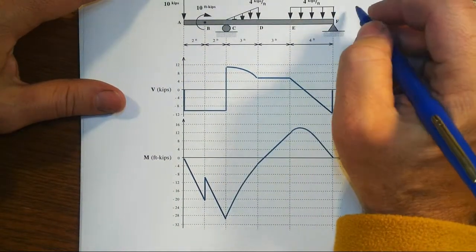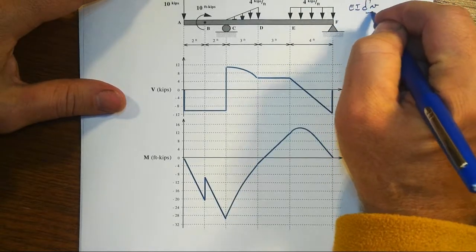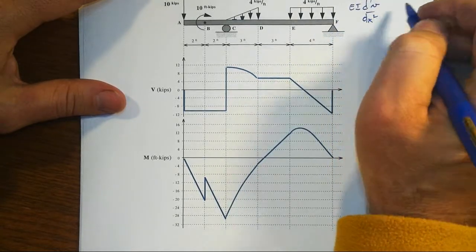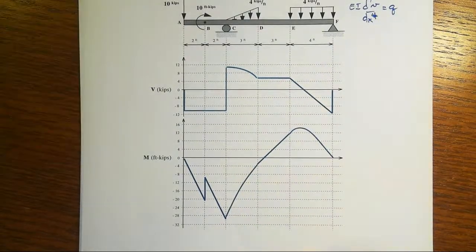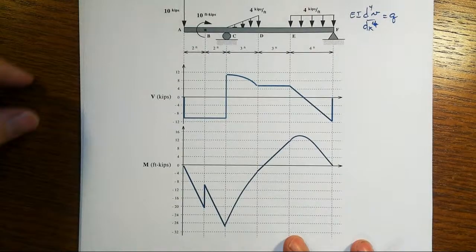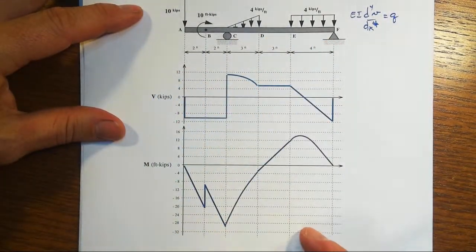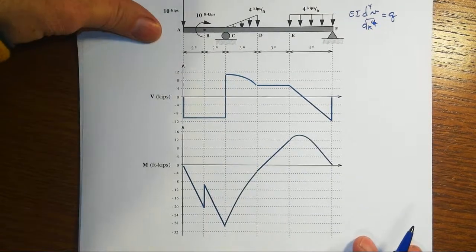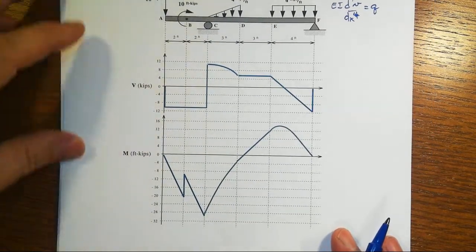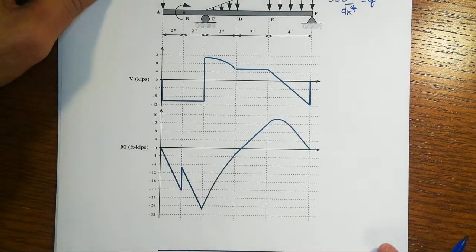If E and I are constant, then it does simplify a little bit, and we get the fourth derivative of the deflected shape times EI is going to be equal to the distributed load function. Okay, fine, but, again, integrating all of this stuff is not going to be pleasant at all, and we'll talk in just a second about what that might look like in more detail, but let's look first at what we anticipate the deflected shape might turn out to be.